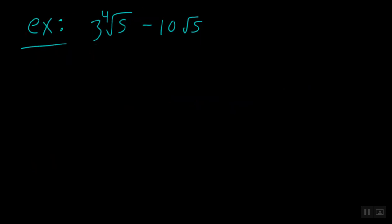Here's our last example, and we have 3 fourth roots of 5 minus 10 square roots of 5. So you'll notice these are actually different radicals. So even though the number on the inside is the exact same, we actually cannot combine here. The fourth root of 5 is not a similar term to the square root of 5. They're not like terms. They cannot be combined. So this is another example where the radical itself has to be the exact same.